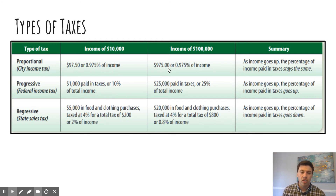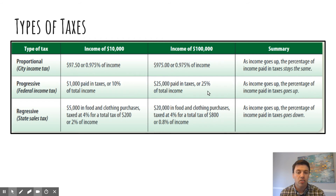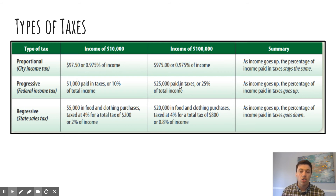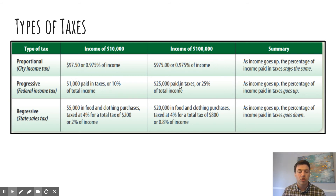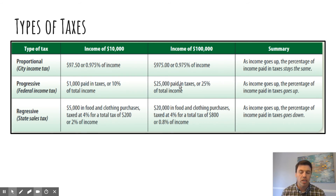Progressive tax is what we use for our federal income tax. As your income goes up, you pay a higher percentage of your income. In the case of the person making $100,000 a year, they pay a 25% income tax — that's $25,000 of their $100,000. The person making $10,000 a year pays a 10% rate, which comes out to $1,000. So both the overall amount — $1,000 compared to $25,000 — and the percentage increase as you make more money. Many people would argue the progressive tax is more fair because the person making $10,000 has a much larger need for that money than the person making $100,000. So it's a debate about what's equitable in the end.